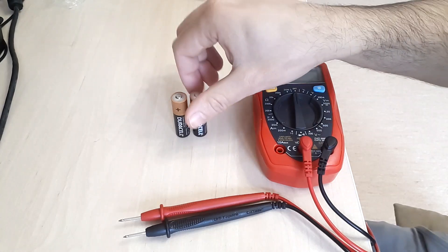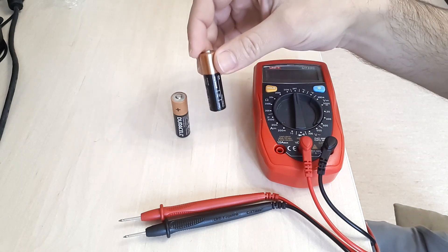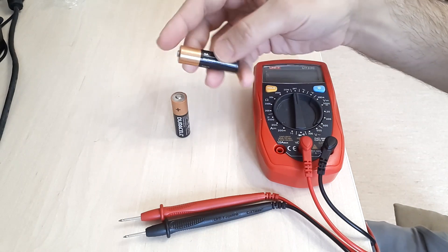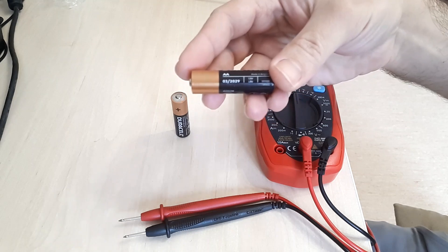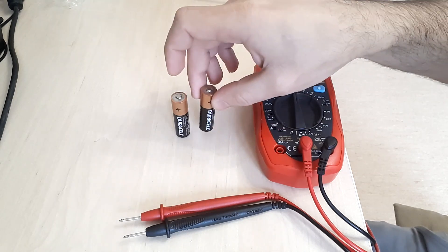Hello. Today's video will be about two batteries that are still not at the expiry date. They expired in the third month of 2029. They are genuine Duracell batteries.